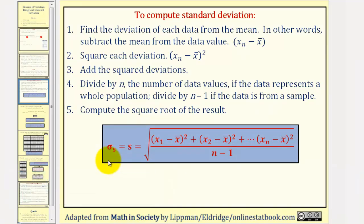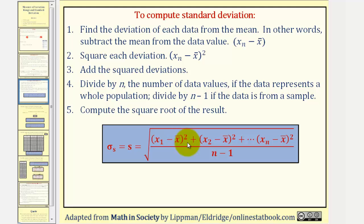Here's the formula for standard deviation. Notice we're dividing by n minus one, so this is the formula for a sample. If it were just n, it would be the formula for a population. Looking at the numerator, we first find the difference of each data value and the mean, then square each difference, then find the sum, then divide by either n or n minus one, and finally take the square root.